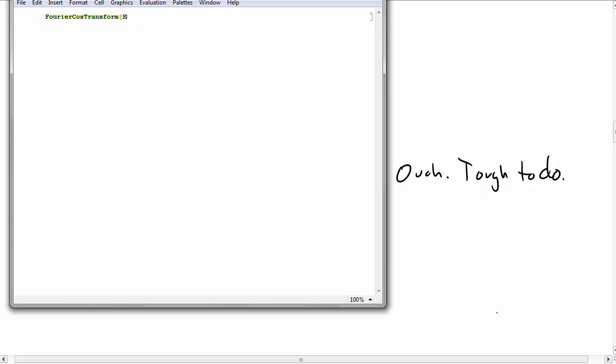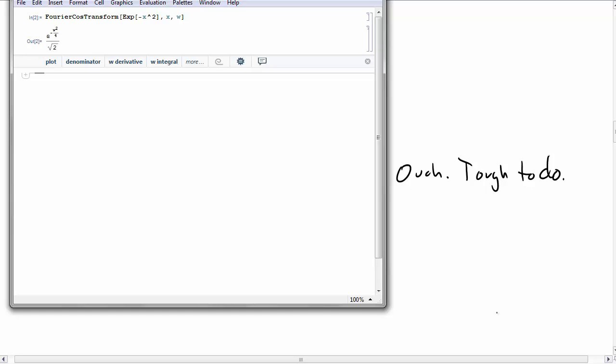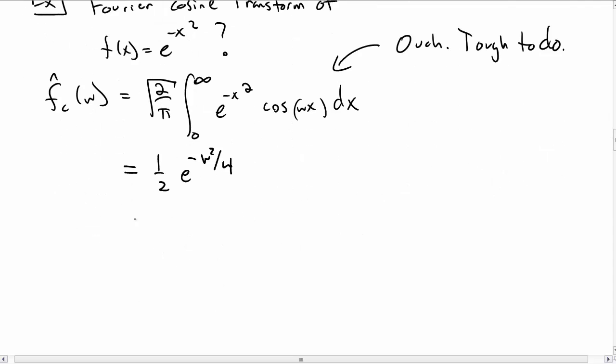So let's call up Mathematica and do this on a computer. We write e to the minus x squared with respect to x, and we want it to be in terms of ω. And it spits out a Fourier cosine transform. Converting this to our convention, this becomes 1/2 e to the minus ω squared over 4.